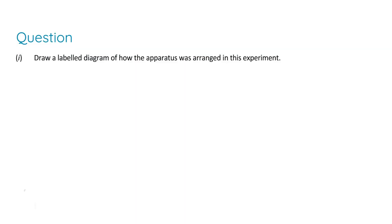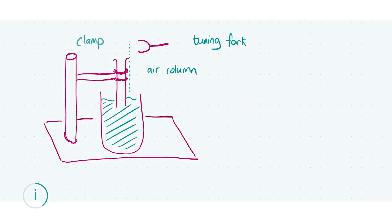In part I, we are asked to draw a labeled diagram of how the apparatus was arranged in this experiment. This is a straightforward theory question — you just have to remember the diagram. The important labels are: the tuning fork at the top, which you strike to generate sound waves; the air column (shown as a dotted line), which is the length from the water surface to the top of the resonance tube; and the clamp, which is used to change the height of the resonance tube in the water to adjust the length of the air column.